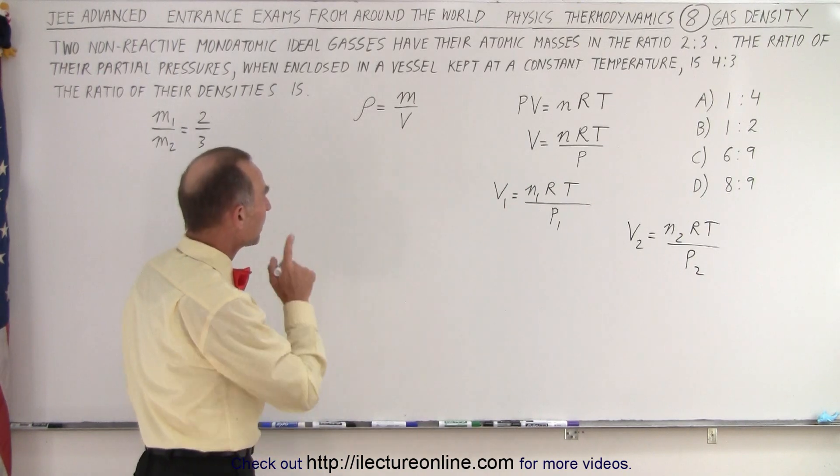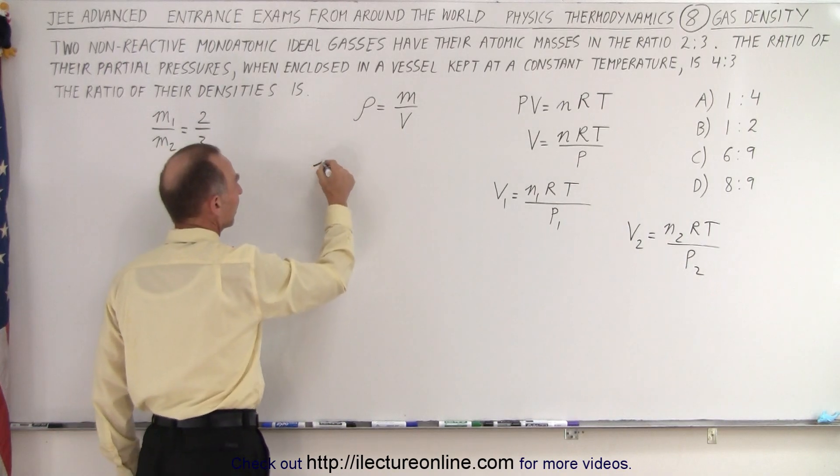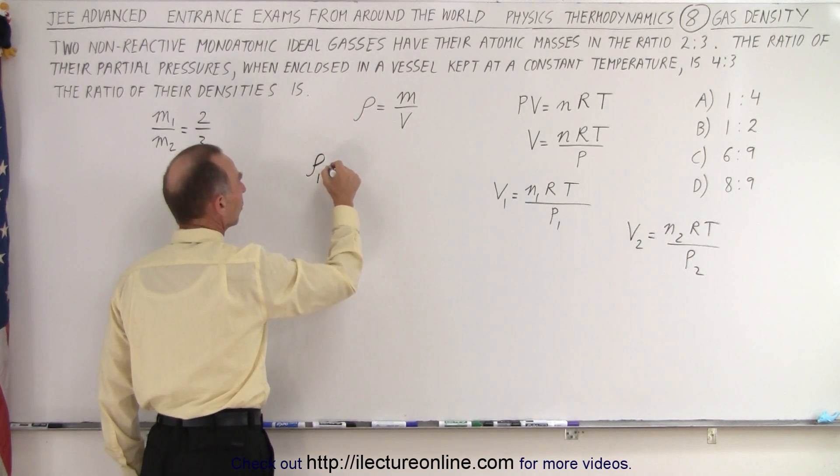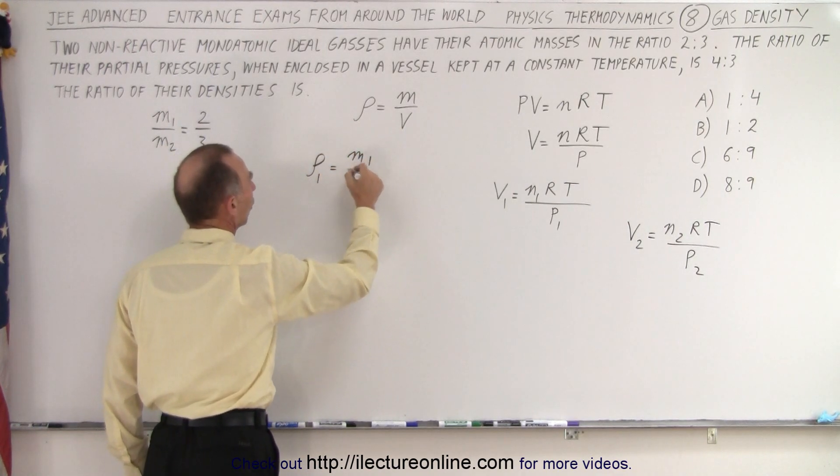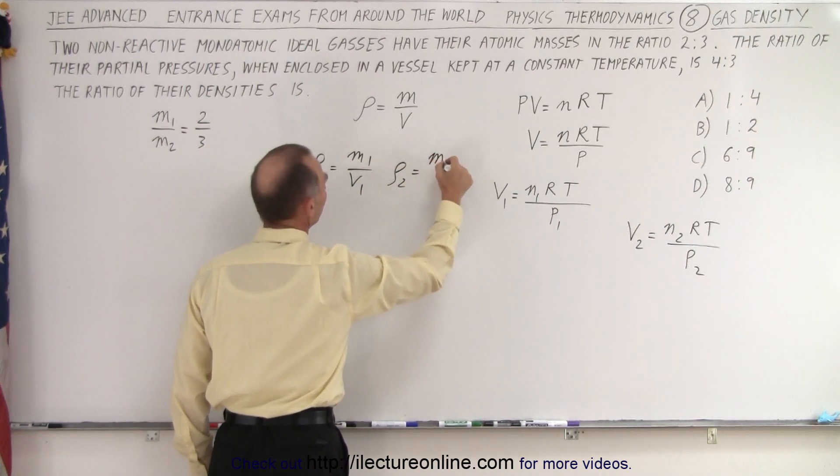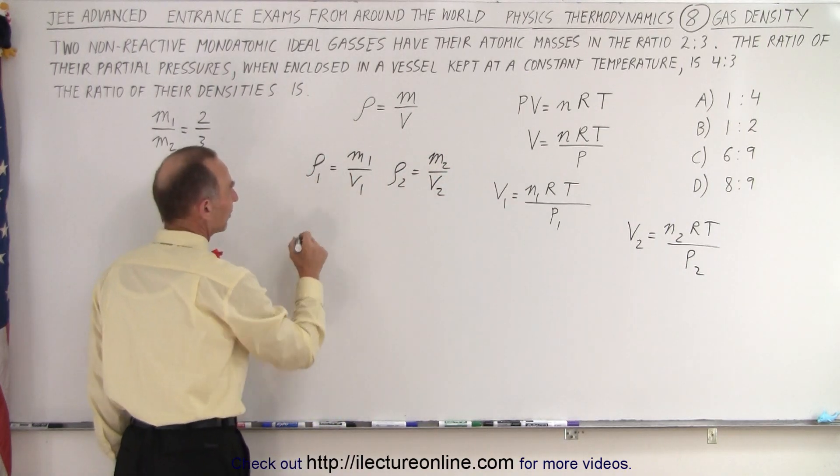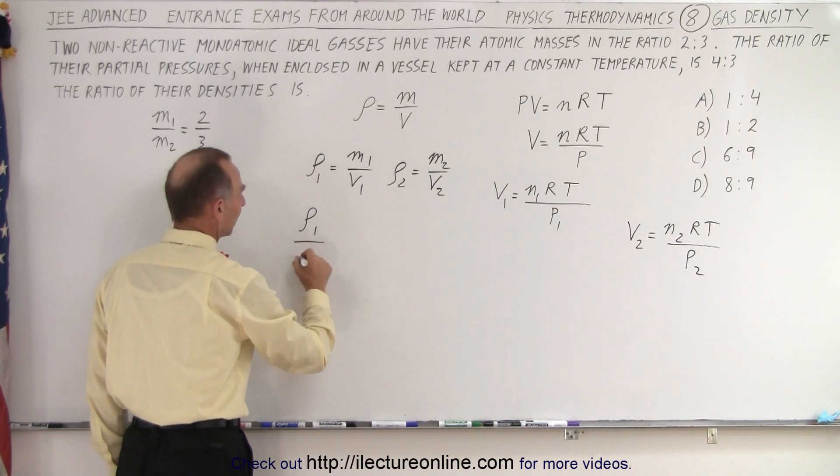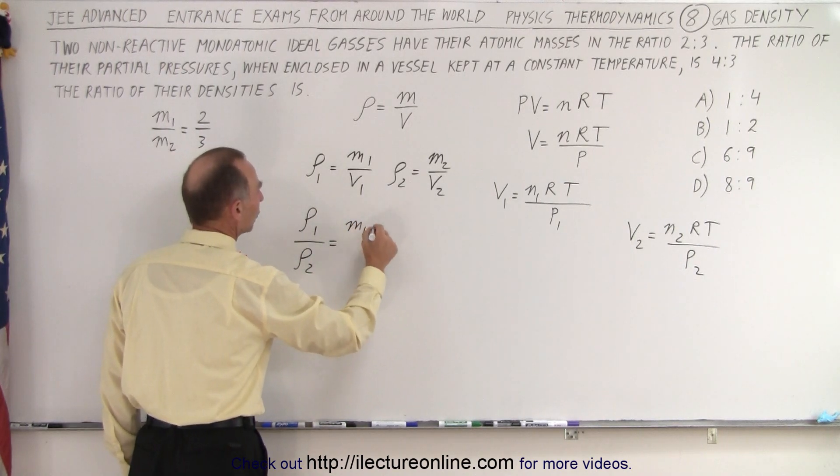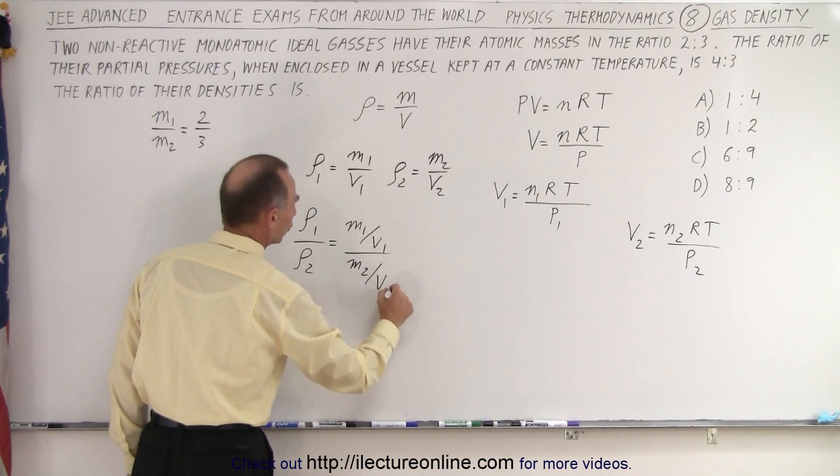All right, now, if we want the ratio of their densities, we could say that the density 1, which is equal to m1 over V1, and density 2, which is equal to m2 over V2, then we could say that density 1 divided by density 2 is equal to m1 over V1 divided by m2 over V2.